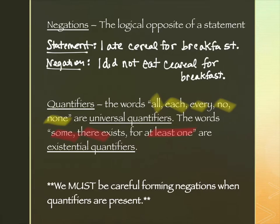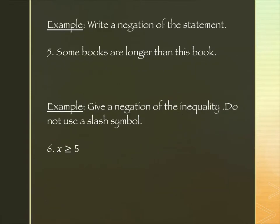When working with negations with quantifiers, we're going between quantifier types: if we have an existential, it will become universal, and if we have a universal quantifier, it will become an existential. The example we're going to do with language is number five: "some books are longer than this book."